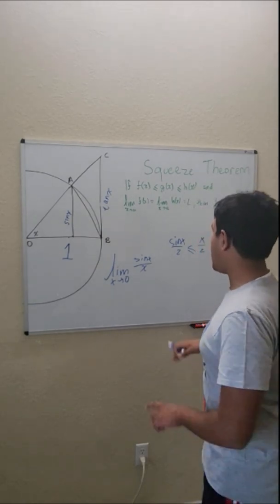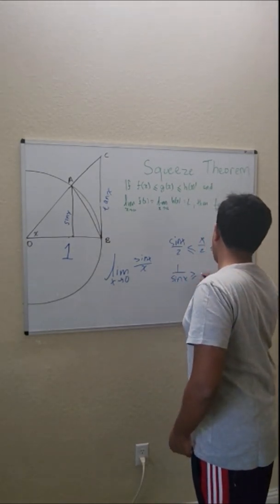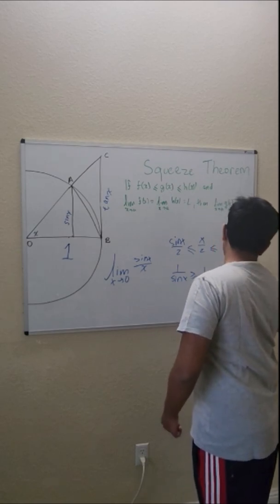Multiply both sides of this equation by 2 and then take the reciprocal, we get 1 over sine of x greater than or equal to 1 over x greater than or equal to cosine of x over sine of x.